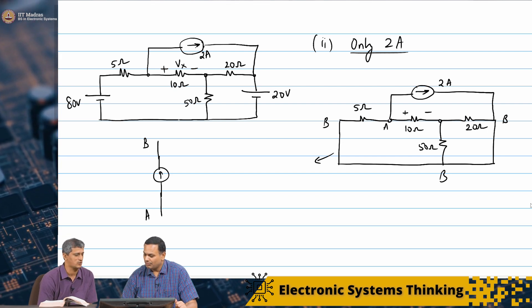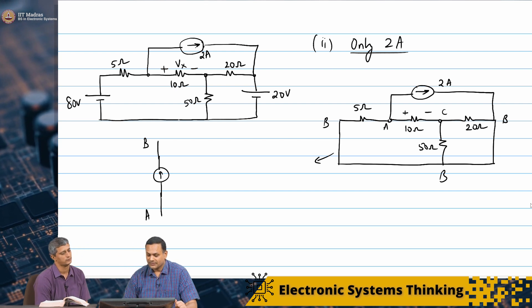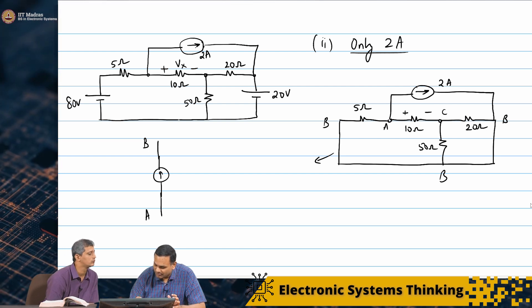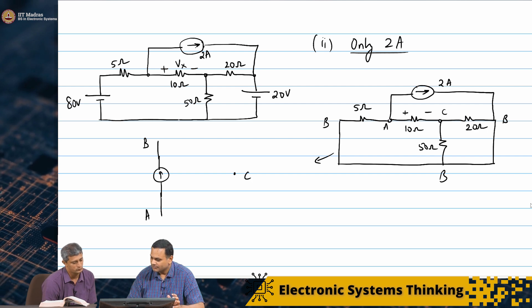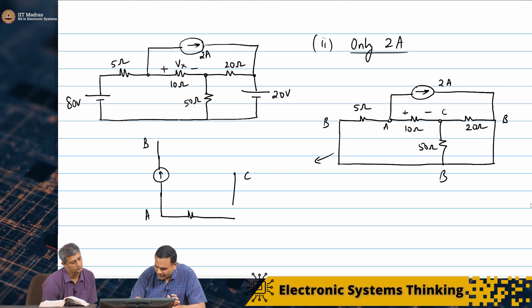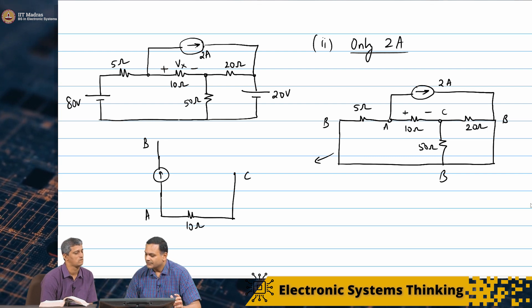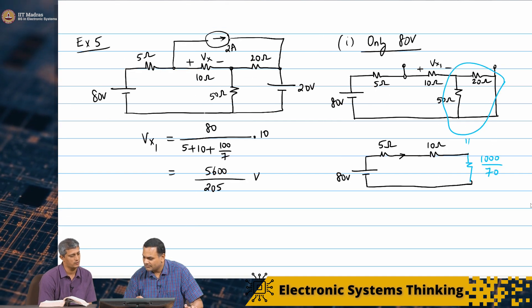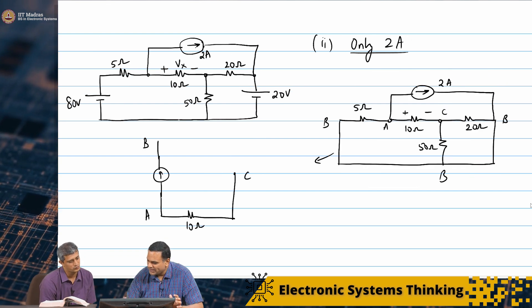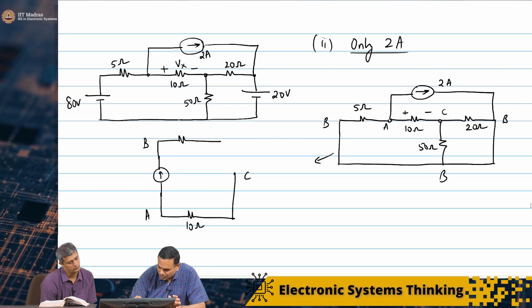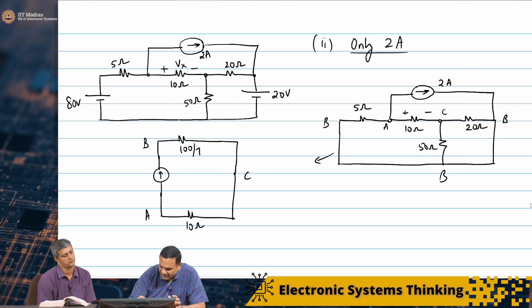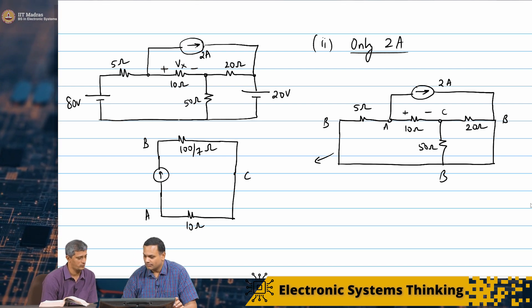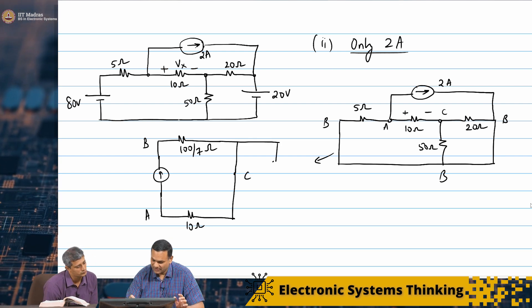I have 50 and 20 in parallel. Let us call this node C. Between A and C, I have 10 ohms. Between C and B, I have 100 by 7 ohms. Between A and B, I have 5 ohms. I can draw it like this — this is correct.